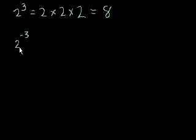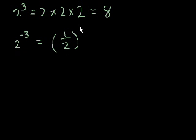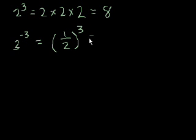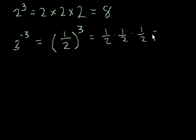I'll explain in a future module why we use this convention, but 2 to the negative third power is equivalent to 1 half to the third power. The negative exponent means to take the inverse of the base — we'll call 2 the base — and take that to the positive version of the exponent. And 1 half to the third power is 1 half times 1 half times 1 half, and that equals 1 eighth.